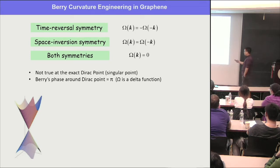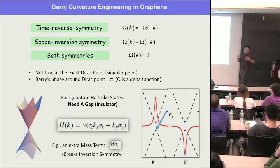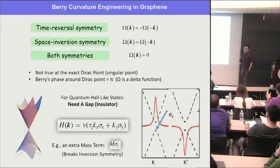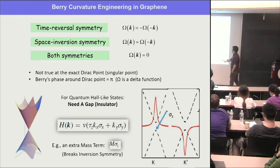You can start engineering Berry curvature from the Dirac point. If you want a topological insulator, you want a gap and an insulating state. You can introduce a gap and see what happens to the Berry curvature. The same symmetry argument applies: if you introduce a gap, for example, by adding a sigma_z term with coefficient m, the gap will open.